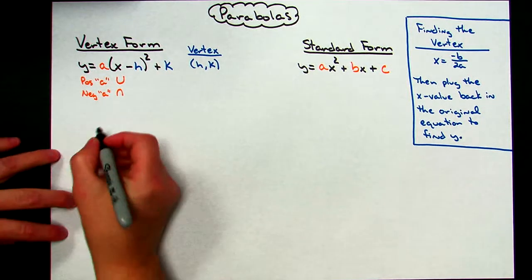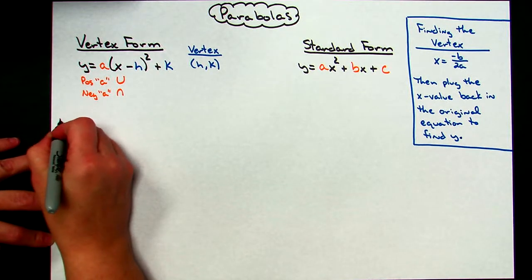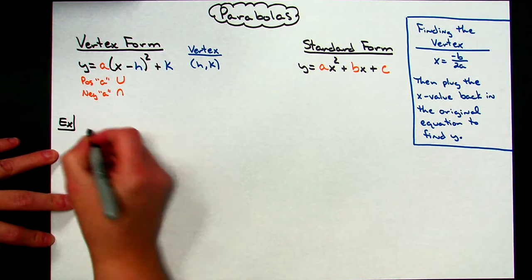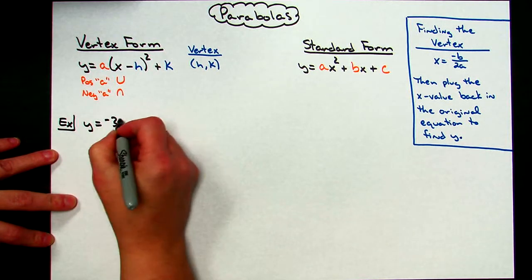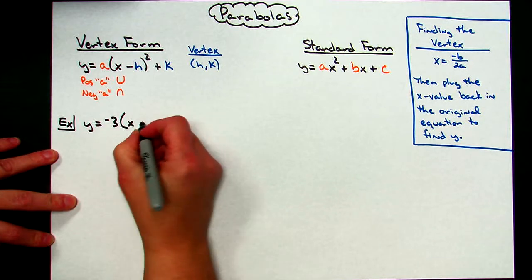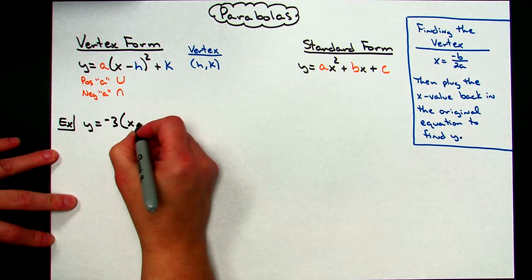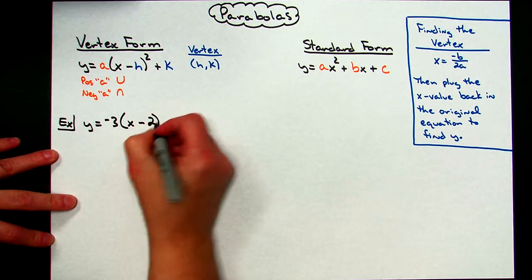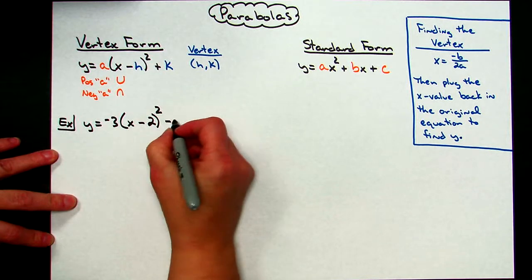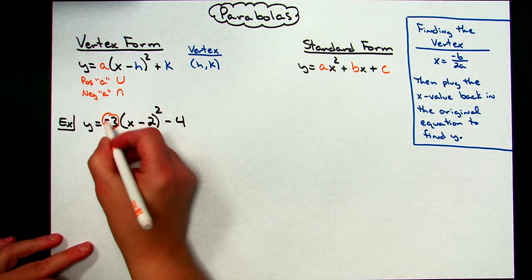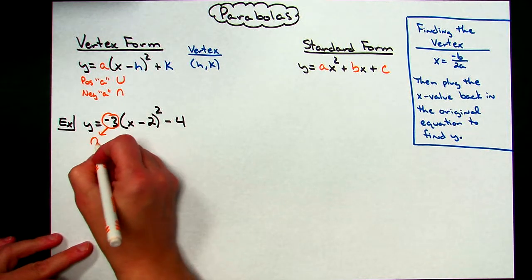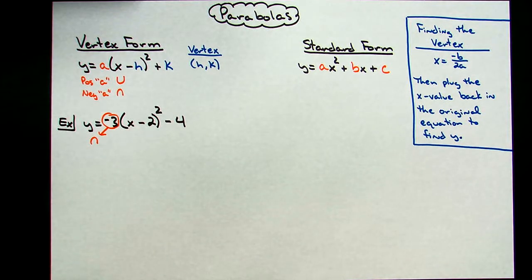Let's take a look at one in vertex form and then just do a really rough sketch. Let's suppose we've got y equals negative 3 times the quantity (x minus 2) squared minus 4. Looking at the leading coefficient of a right there, this is definitely going to tell me that it is an upside down parabola.